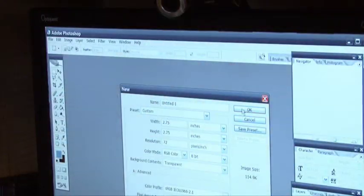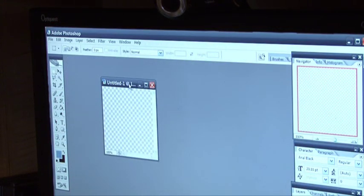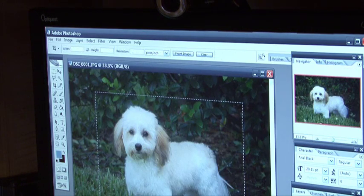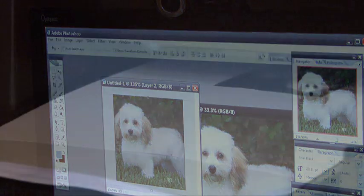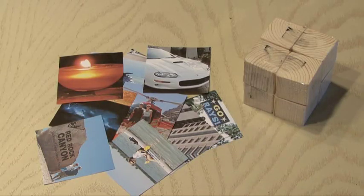Now it's time to get our photos ready, so I used Photoshop and designed a template that was two and three quarters square, imported the photos I wanted to use and pasted them in the square, and then printed out each photo. Now you'll need 12 to complete the magic photo cube.